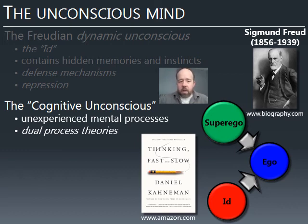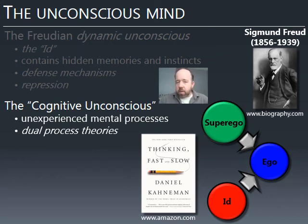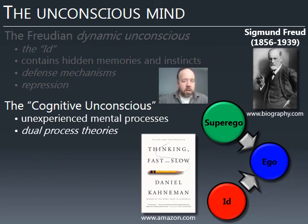Dual process theory posits that we have a conscious process that's slow and deliberate — it really thinks about a stimulus and comes up with a plan of action — but we also have an unconscious process. These are often called System 1 for the unconscious process and System 2 for the conscious, deliberative one. This is illustrated in the book Thinking Fast and Slow by Daniel Kahneman — I highly recommend it. We have both of these processes because they're both useful in different contexts. System 1 is fast and automatic and unconscious. System 2, we get a better answer many times — we really think about it, plan out the best course of action, and think about consequences — but it takes longer and more mental energy.